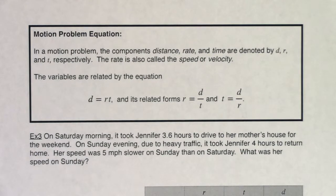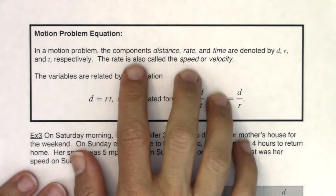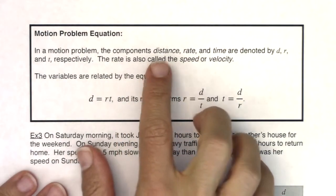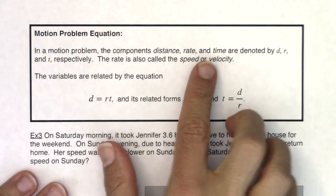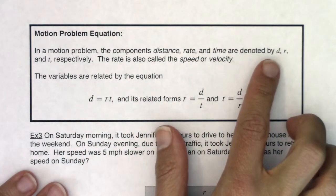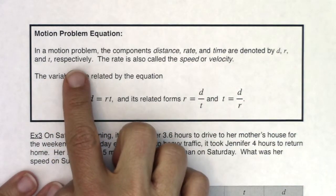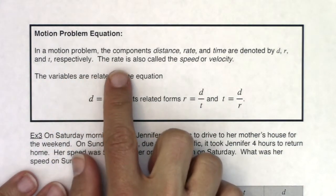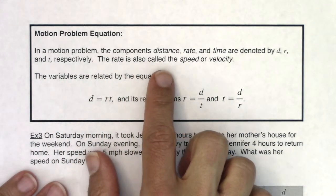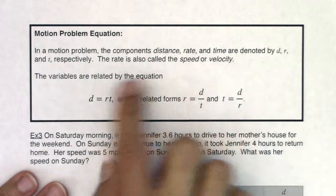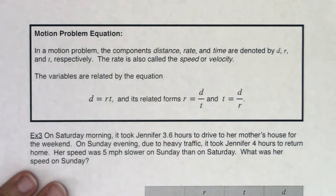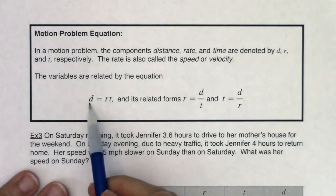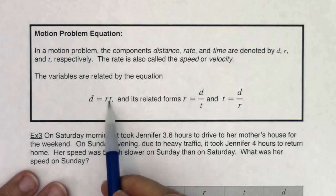Let's take a look at the motion problem equation. If you have a motion problem, there are going to be components of distance, rate, and time — typically denoted by d, r, and t respectively. The rate is also called speed or velocity. The key equation is: distance is equal to rate times time.